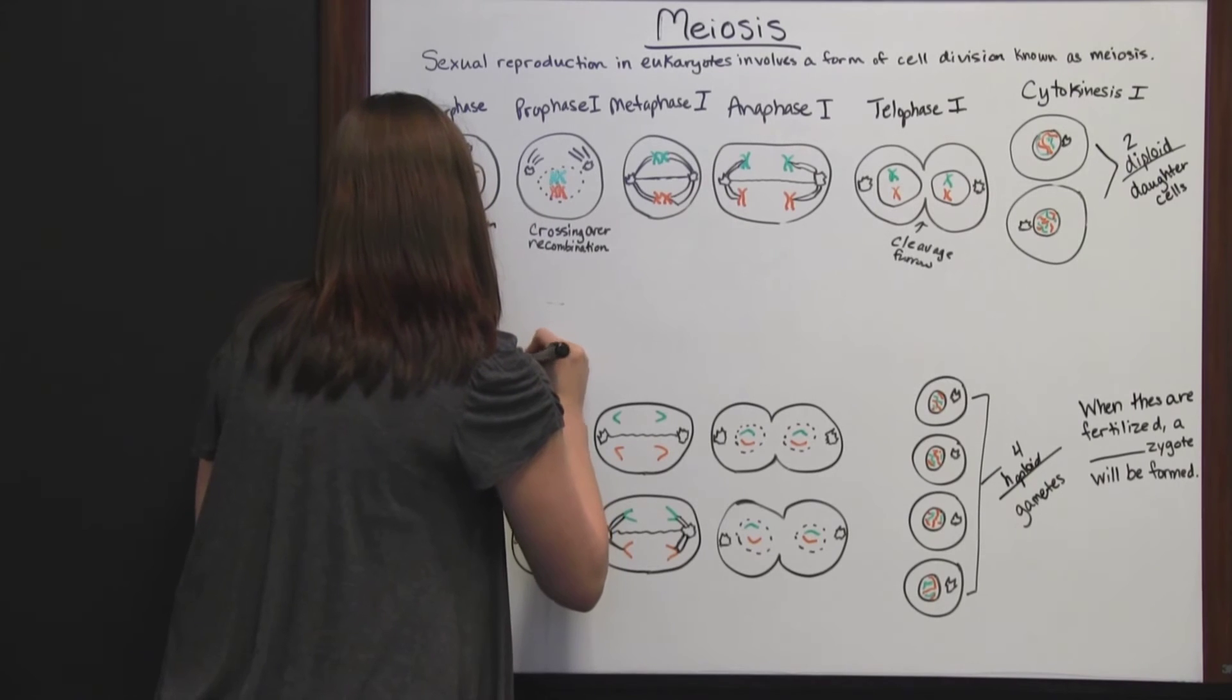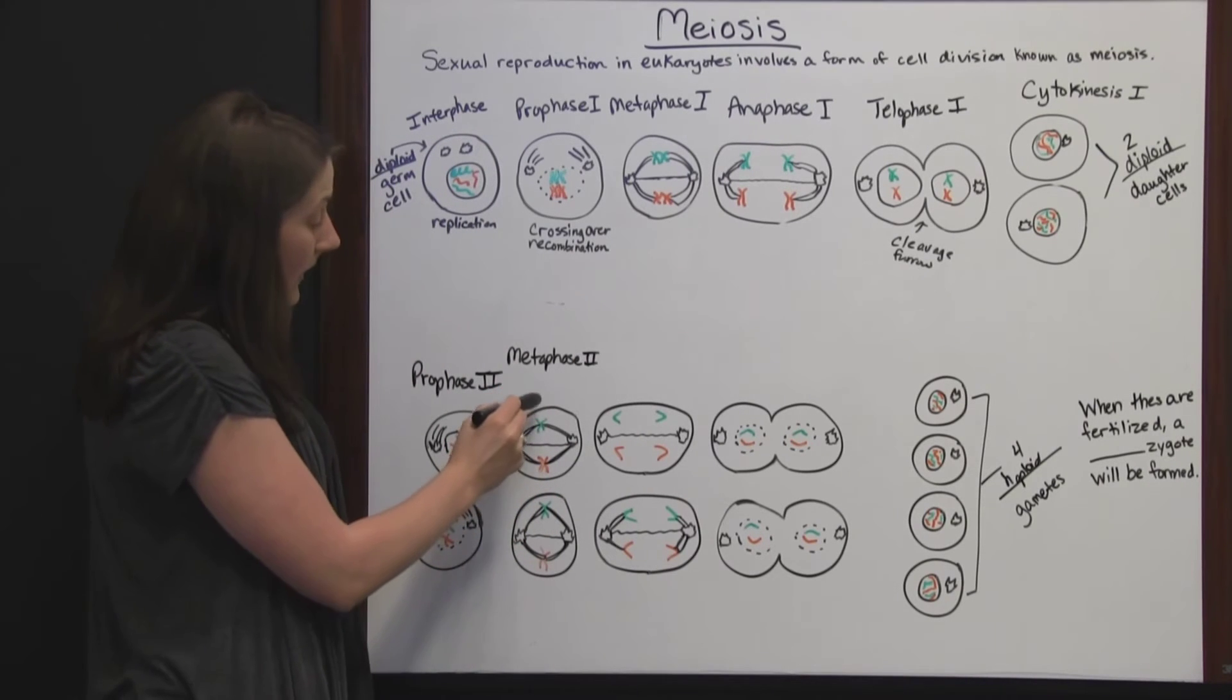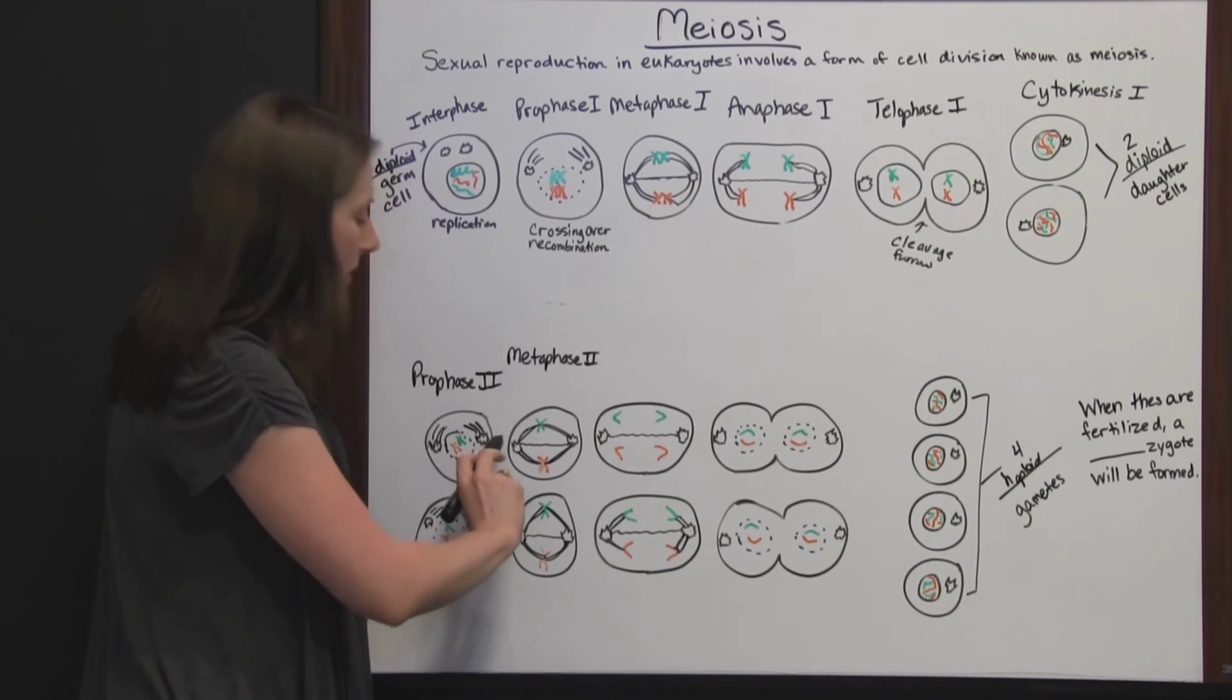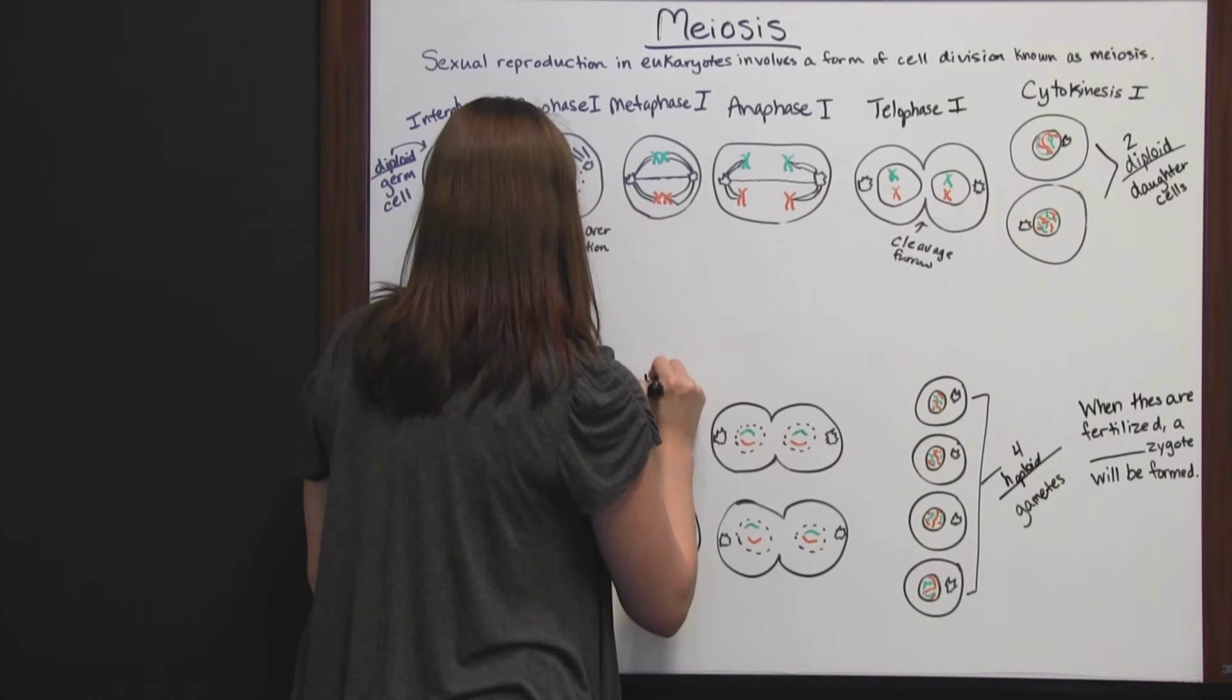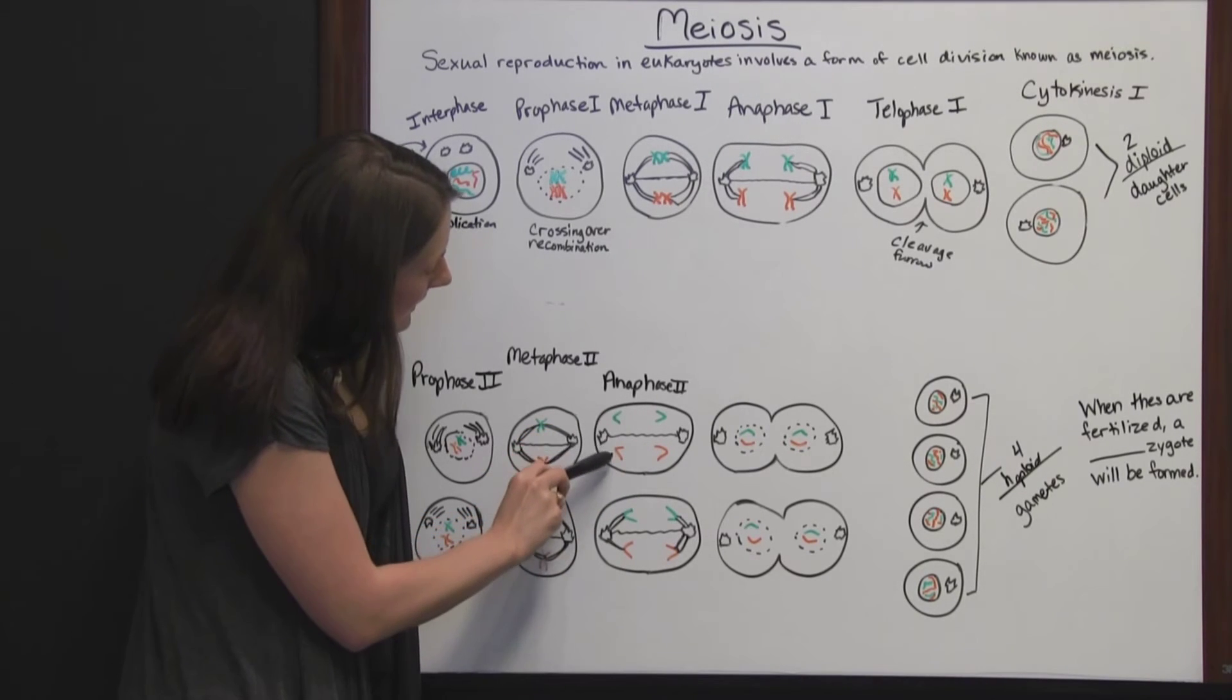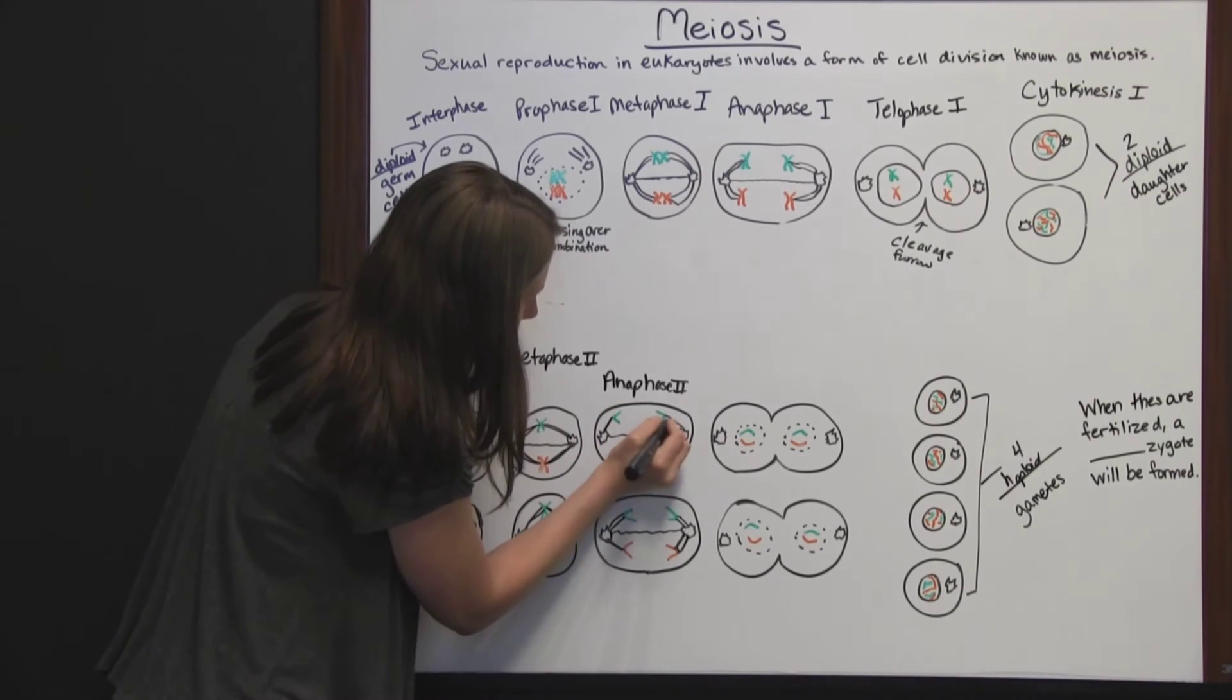In metaphase II, the chromosomes line up along the equatorial plate in both daughter cells. The microtubules connect them to the centrosomes and start pulling them apart. In anaphase II, the chromosome pairs are pulled apart, and the individual chromatids are on separate sides of the cell, being reeled in by the microtubules.